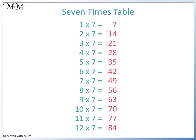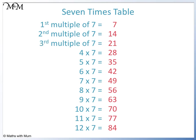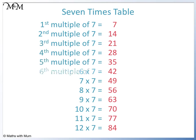7 is the first number in the 7 times table, so it is also the first multiple of 7. 14 is the second number in the 7 times table, because 2 times 7 equals 14, so 14 is the second multiple of 7. 21 is the third multiple of 7, and so on.